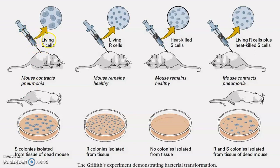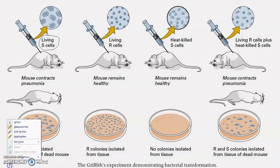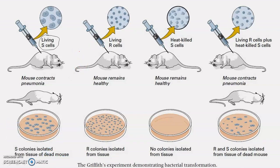In the first step, Frederick Griffith injected living S cells — smooth cells that are pathogenic and can develop pneumonia — into healthy mice. The mouse developed pneumonia and got killed. After the death of the mouse, when Griffith isolated colonies from the tissues, S-type colonies were isolated from the dead mouse. So he injected living S bacteria and finally isolated S bacteria from the dead mice.